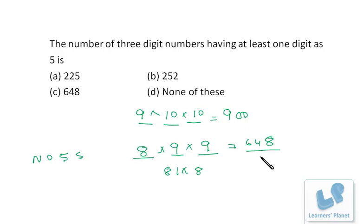So 900 minus 648, that is 252. So 252 numbers are there in which at least one five will be there. I hope you are clear.